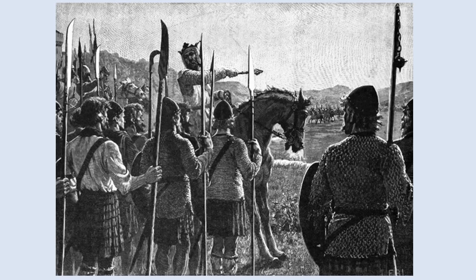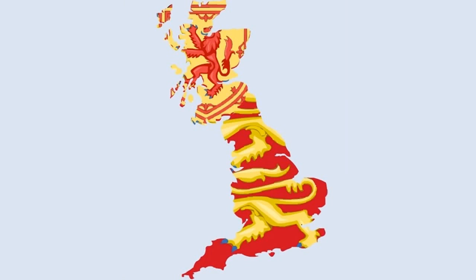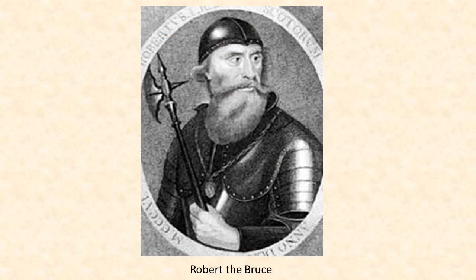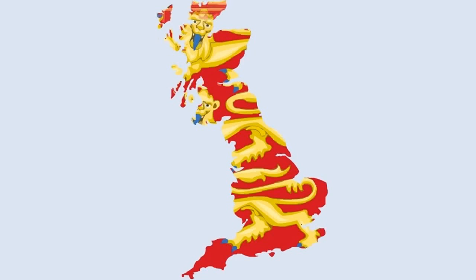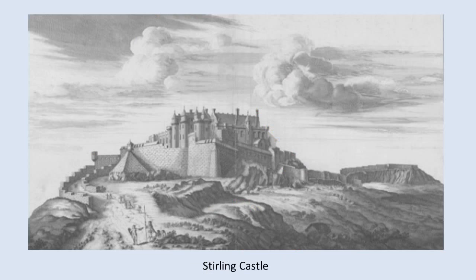The Battle of Bannockburn took place in the year 1314 and was fought in the Scottish town of Stirling. By 1304 Scotland had been fully conquered by England, but under the command of Robert the Bruce, Scottish forces began slowly taking back English military strongholds in Scotland. By 1314 only two fortresses were under English command. Stirling Castle was one of them.